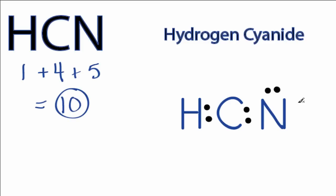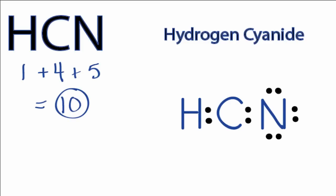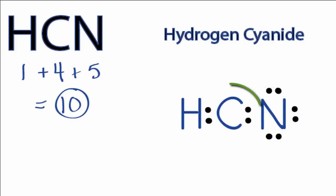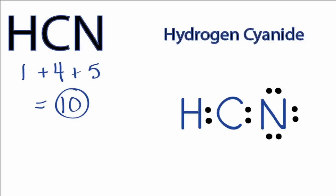Six, eight, and ten. So when we look at the Lewis structure, nitrogen has eight valence electrons, but the carbon only has four. So we're going to need to move some valence electrons from the nitrogen into the center to form a double bond with carbon.